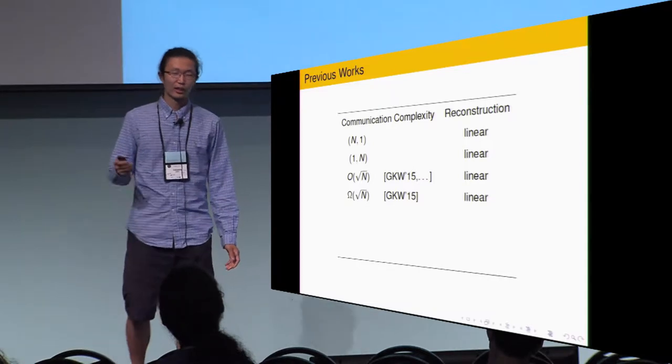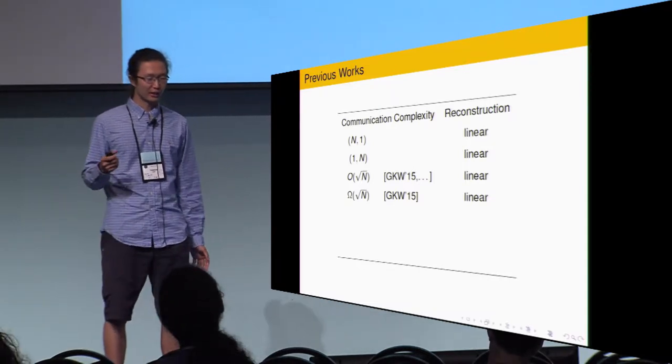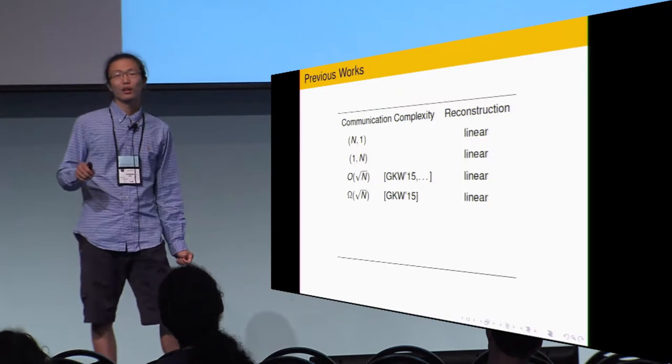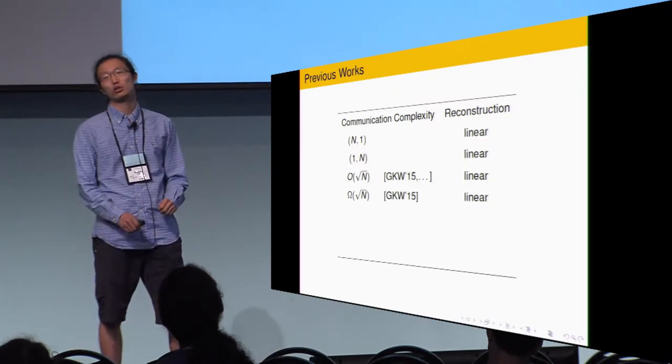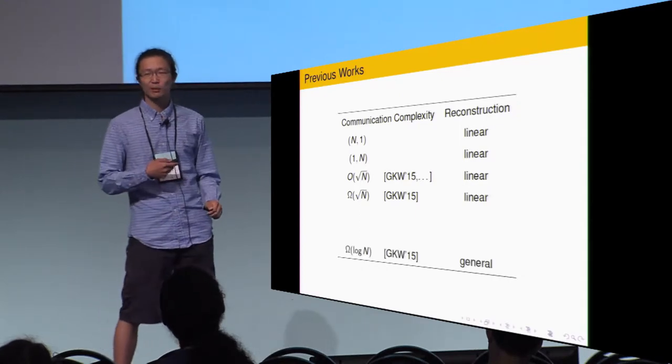Now, already, you have seen two constructions for CDS with linear reconstruction, the communication complexity with n,1 and 1,n. You can do a balancing between them and get other CDS, also linear reconstruction, but the communication complexity is square root n. This is also the best known before us. Gay, Kerenidis, and Wee, they prove that if the reconstruction is linear, square root n is actually the best you can get.